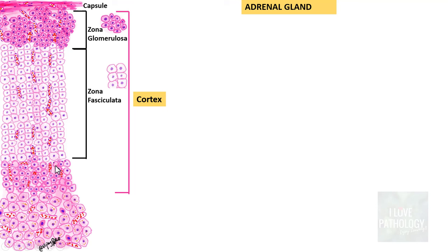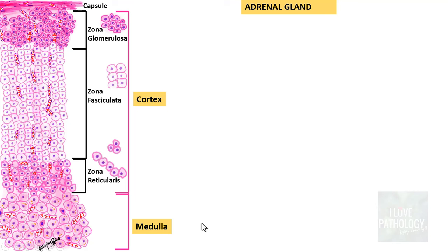Zona Fasiculata is the lightest stained layer and constitutes more than 70 to 80% of the Adrenal Cortex. The third important layer of the Cortex is Zona Reticularis, which is darkly stained with slightly polyhedral cells that can be seen in the form of cords or small clusters. Finally, the innermost part of the Adrenal Gland is the Adrenal Medulla, where you see two different kinds of cells — chromaffin cells, which are the predominant cells, and neuronal cells scattered here and there.